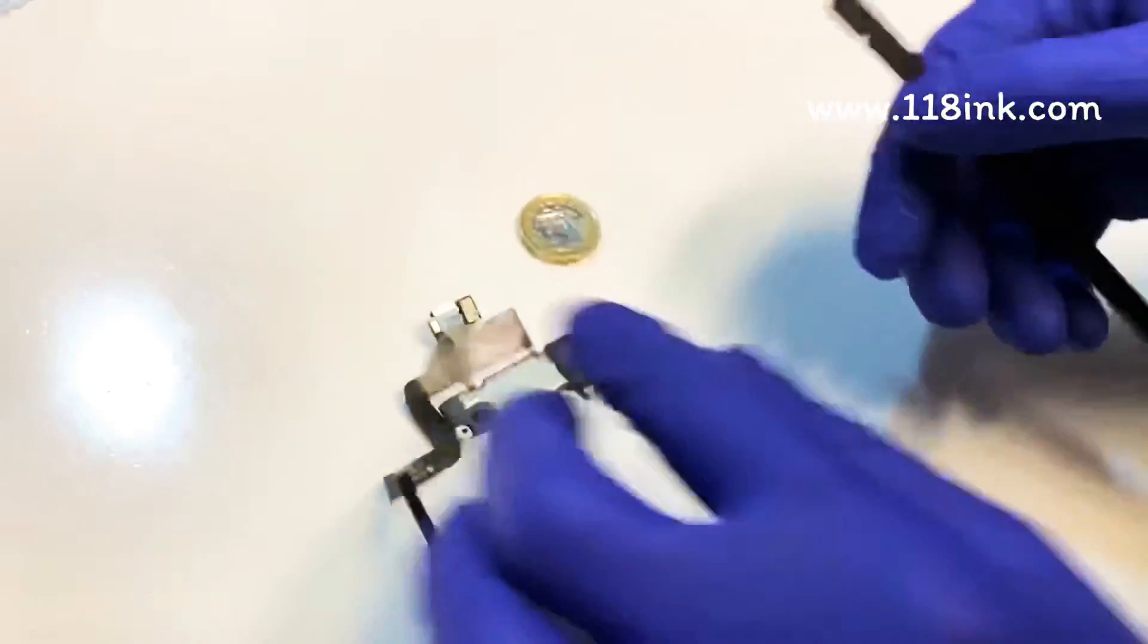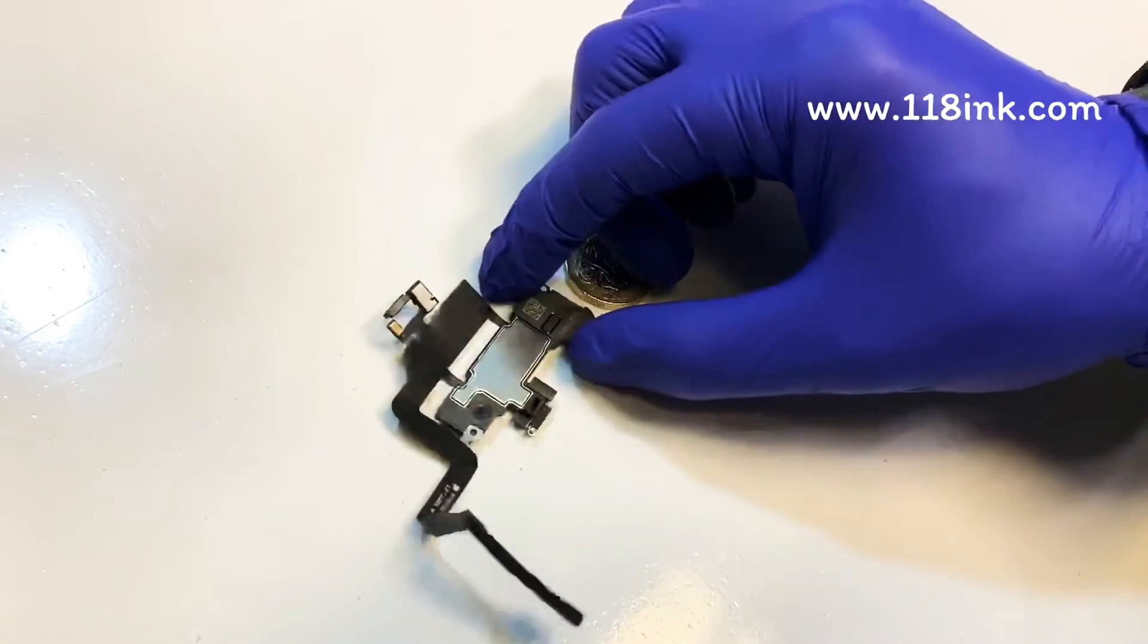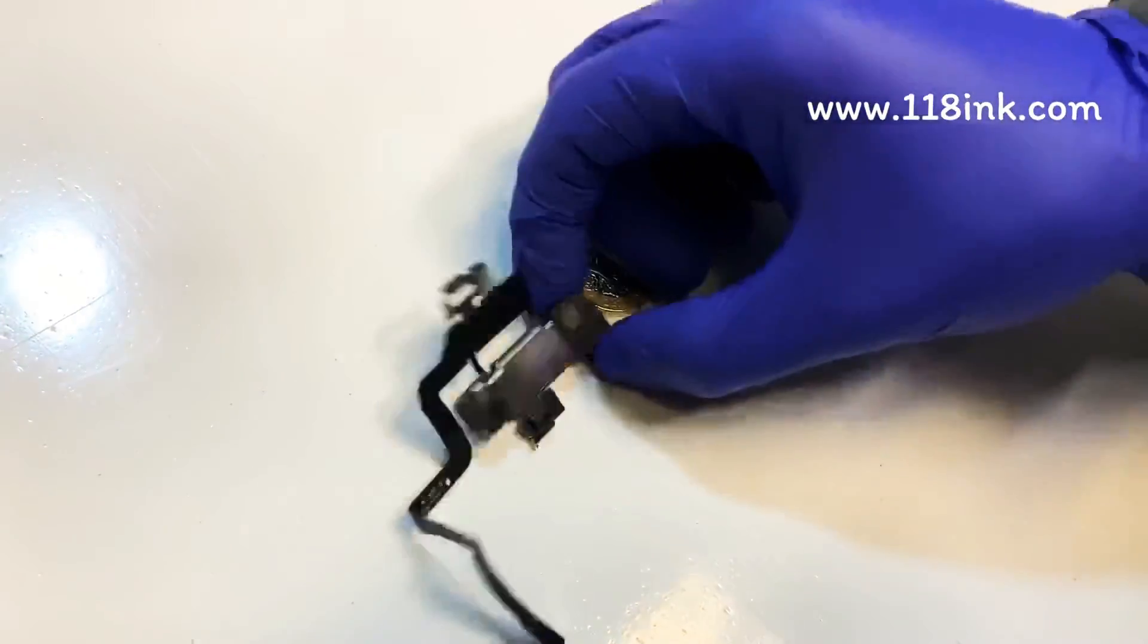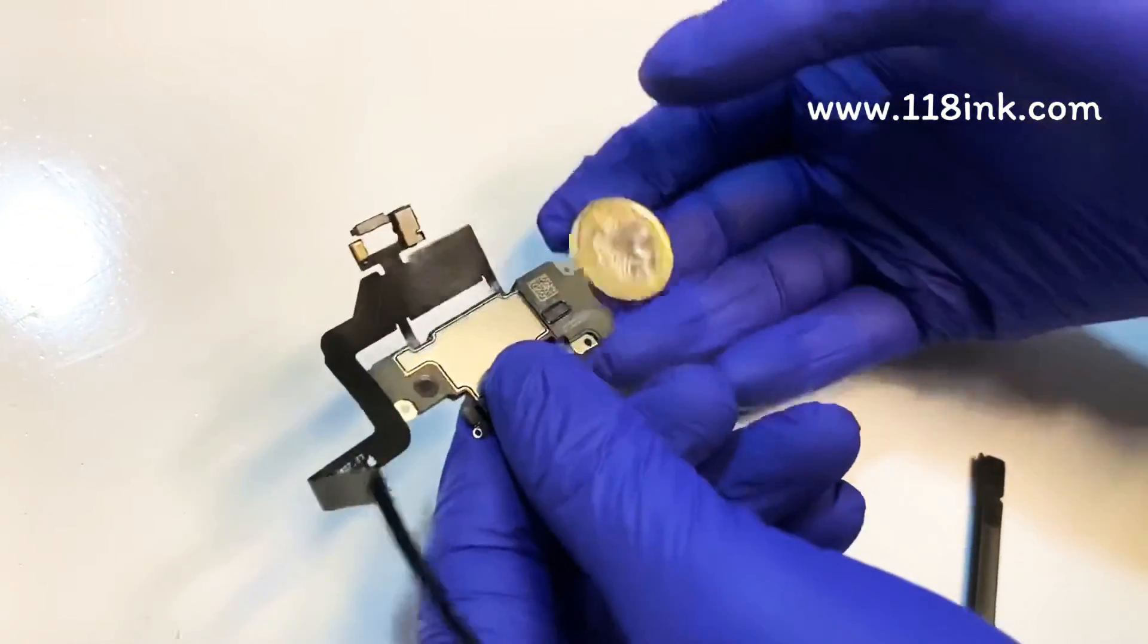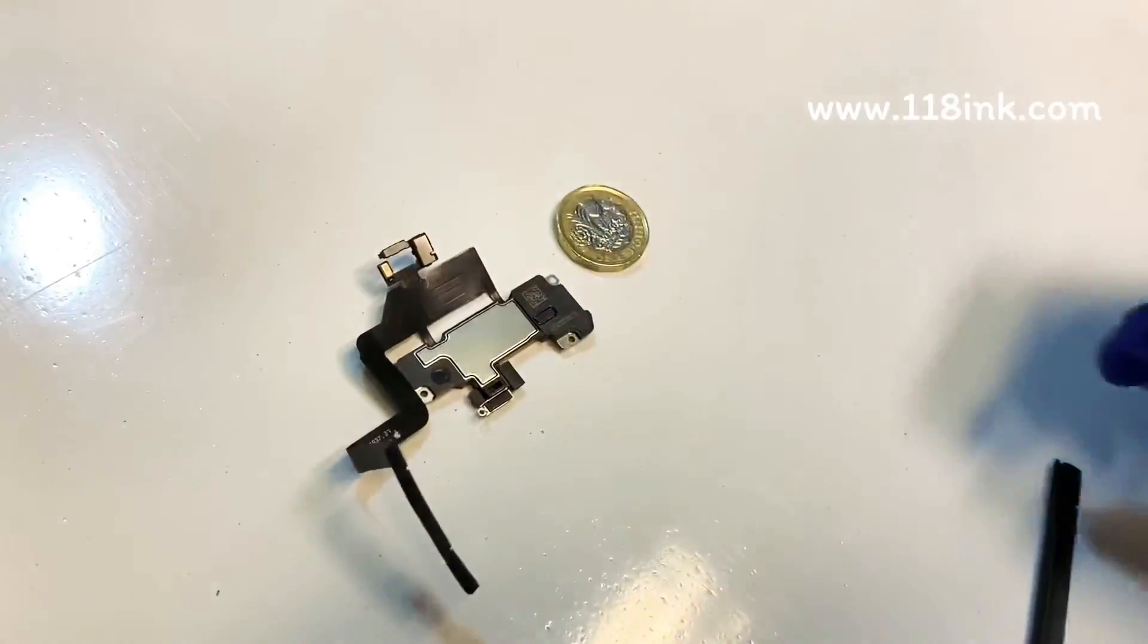To give you an idea how big it is, here we have a UK pound coin. So it isn't exactly huge. I'd say it's more or less the same weight, maybe a little bit lighter than a pound coin.